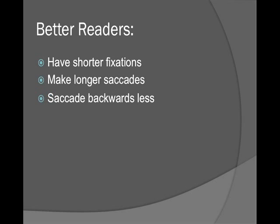People who are better readers have shorter fixations, make longer jumps, and jump backwards less. You could sort of train this, but it's not perfect. It's more about the practice you have reading — the more you practice, the more you will do these things.